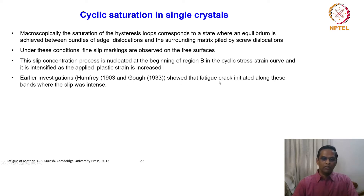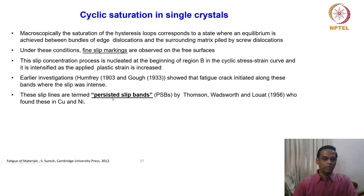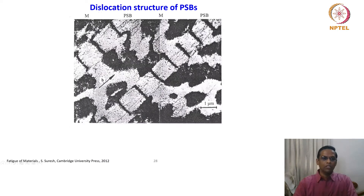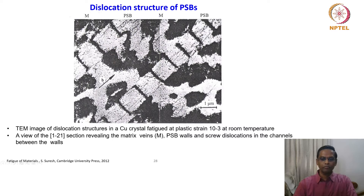Earlier investigations showed that fatigue cracks initiated along bands where slip was intense. These slip lines are termed persistent slip bands (PSBs), as we have seen — popularly called PSBs, proposed by Thomson, Wordsworth, and Lowart in 1956, who found these PSBs in copper and nickel. The name reflects that the slip is a through-thickness slip of the material. This is a typical fatigued microstructure obtained in a copper single crystal at a plastic strain of 10⁻³ at room temperature.